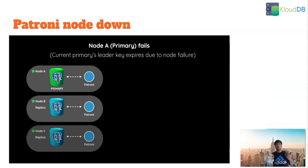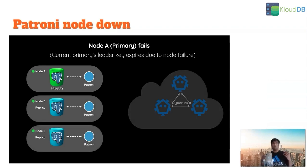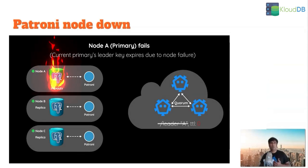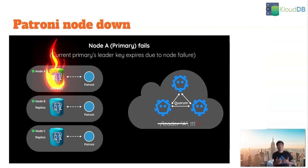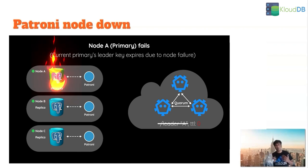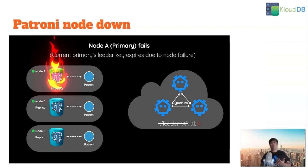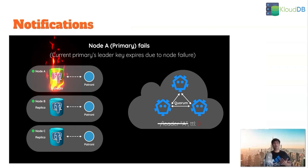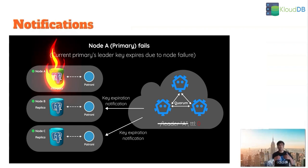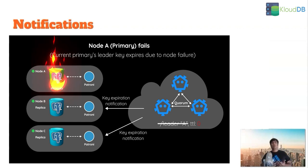What happens when the primary node is down? The primary node goes down and after some time the TTL expires, hitting the 30-second limit. Once the TTL is expired, etcd is going to send an expiration notification.